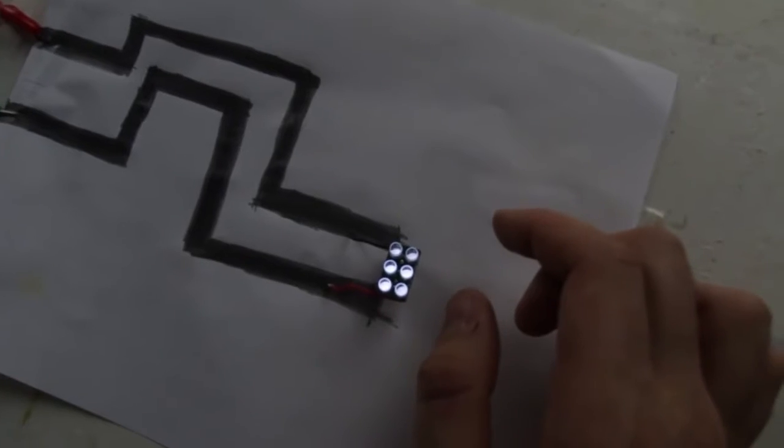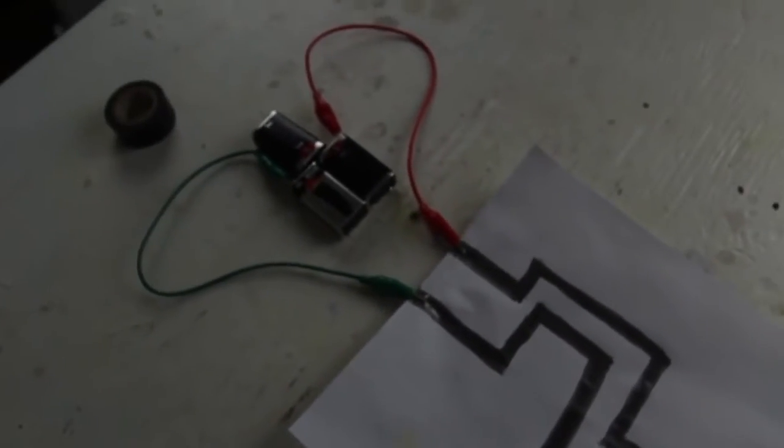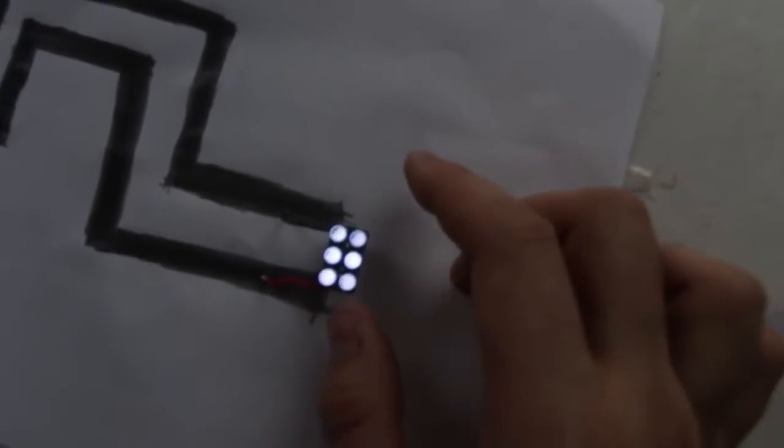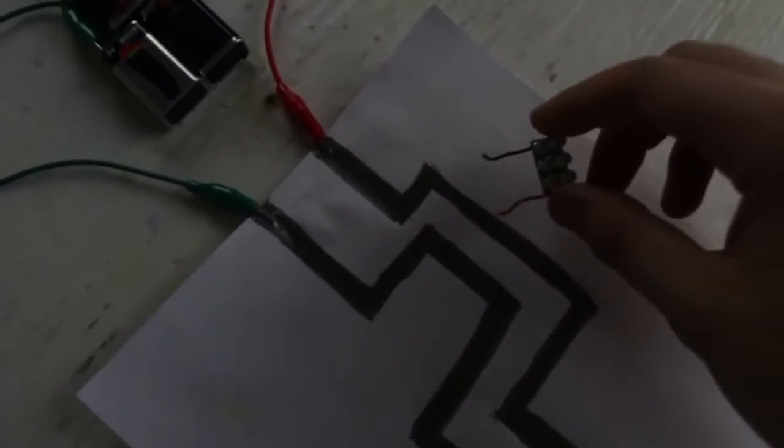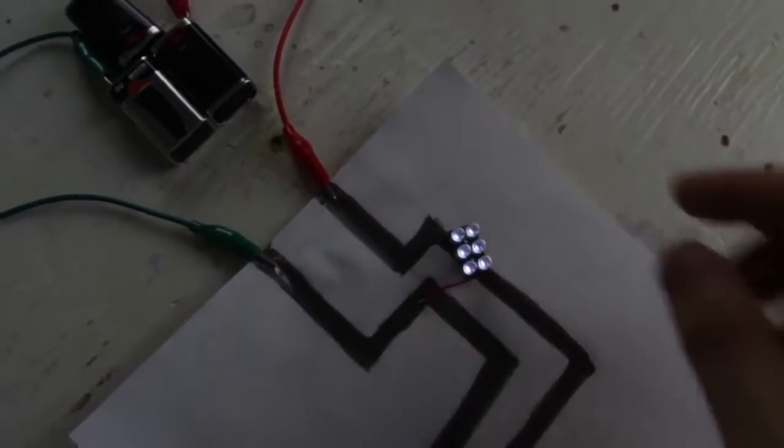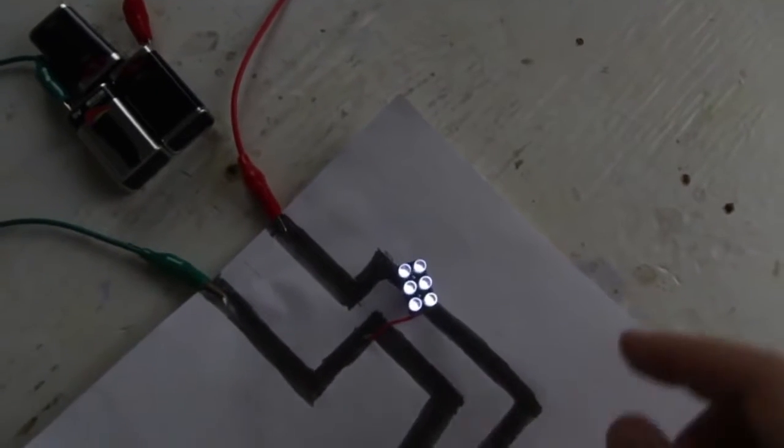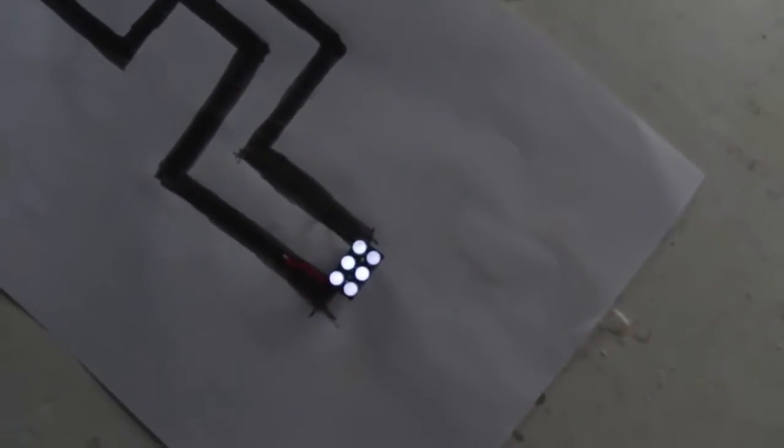So graphite is conductive. Pretty cool experiment, try it yourself. I bet it's gonna be a lot of fun to do with kids. Also what I learned, if you put it close to the batteries, look how bright it is. But if you put it right at the end, look, it's a lot darker.